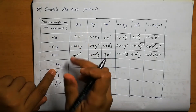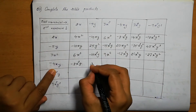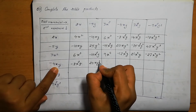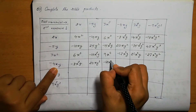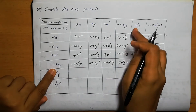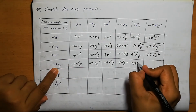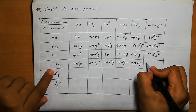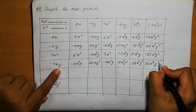Next: minus 4xy into 2x is minus 8x square y. Minus 4xy into minus 5y: minus times minus is plus, 4 into 5 is 20, xy into y is xy square, giving 20xy square. Minus 4xy into 3x square is minus 12x cube y. Minus 4xy into minus 4xy: minus times minus is plus, giving 12x square y square. Minus 4xy into 7x square y: minus 28, x into x square is x cube, y into y is y square, giving minus 28x cube y square. Minus 4xy into minus 9x square y square: plus, 9 into 4 is 36, giving 36x cube y cube.